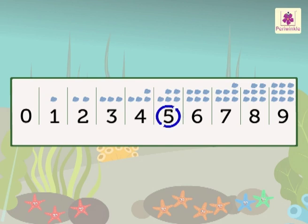Let us take number five on the number strip. When you count backward by one from five, you get the number four.